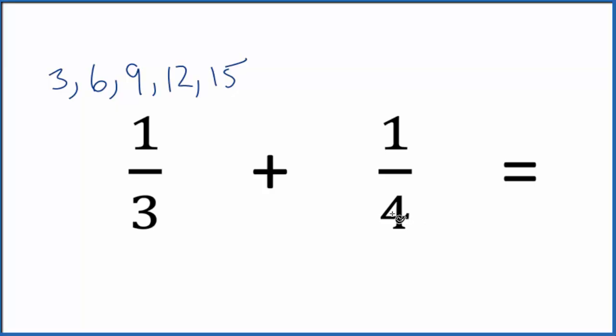For 4, we have 4 times 1, that's 4. 4 times 2 is 8. 4 times 3 is 12. And wait, there it is—12! So 12, that's the common factor between 3 and 4. We can use this as our common denominator.